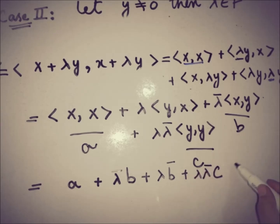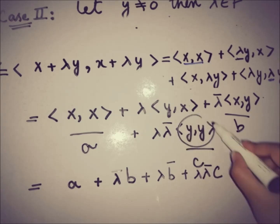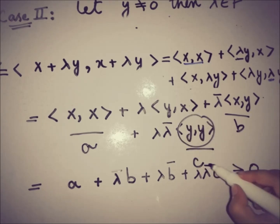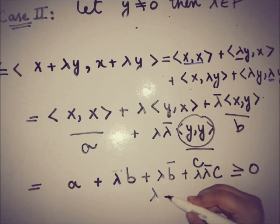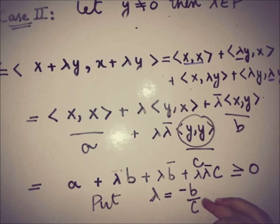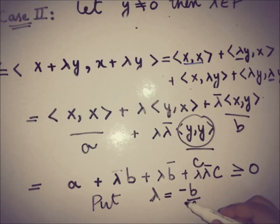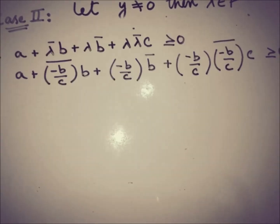Since y is not equal to zero, c = ⟨y, y⟩ is not equal to zero. We now choose the value of λ = −b/c. We can make this assumption because c cannot equal zero, and substituting this specific value of λ will allow us to simplify the inequality.